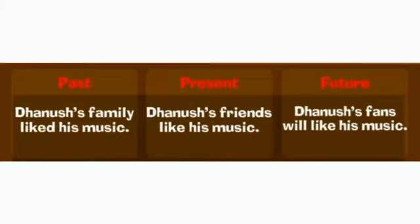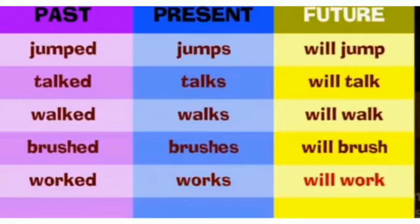Next example: Dhanush's family liked his music — past tense; Dhanush's friends like his music — present tense; Dhanush's fans will like his music — future tense. Here are some verb examples of past, present, and future: jumped / jumps / will jump; talked / talks / will talk; walked / walks / will walk; brushed / brushes / will brush.